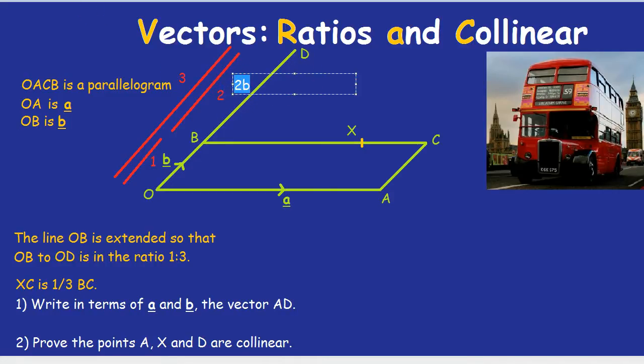Did that make sense? Basically, we looked at the ratio OB to OD, and we saw it as 1 to 3. So we labeled OB as 1, we labeled OD as 3 with lines. So what became clear is that BD must be 2, so that then the 1 plus the 2, the OB plus the BD adds up to the 3.